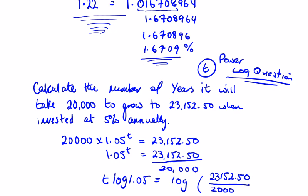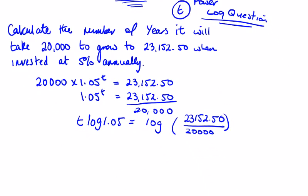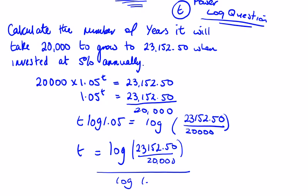So t is equal to the right-hand side, €23,152.50 over €20,000, divided by the log of 1.05. And in this case, t works out to be three.